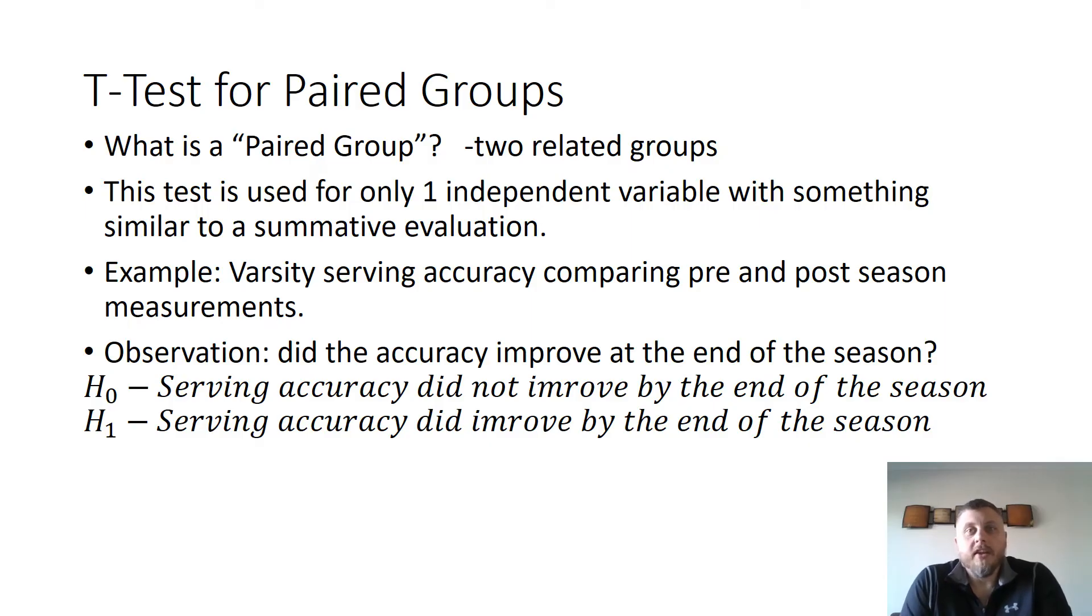So the other type of t-test we're going to consider is the t-test for paired groups. So basically what a pairing is, is your two related groups contrasted against one independent variable. So when you look at the next example here, the varsity serving accuracy. So in a previous example, we were comparing two independent groups, the varsity and the JV.